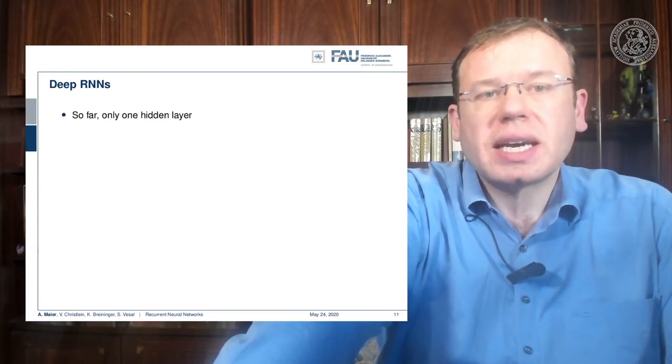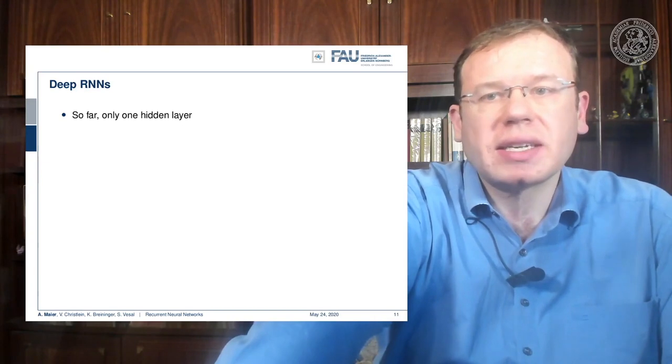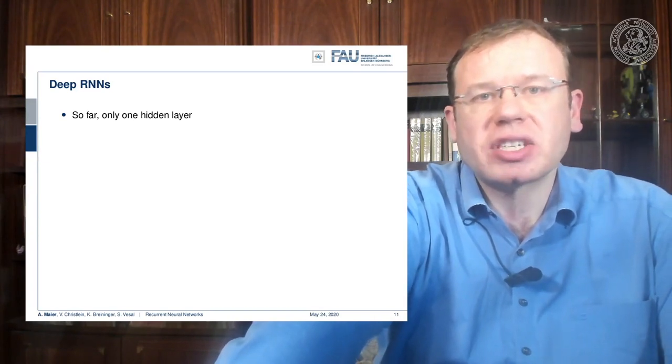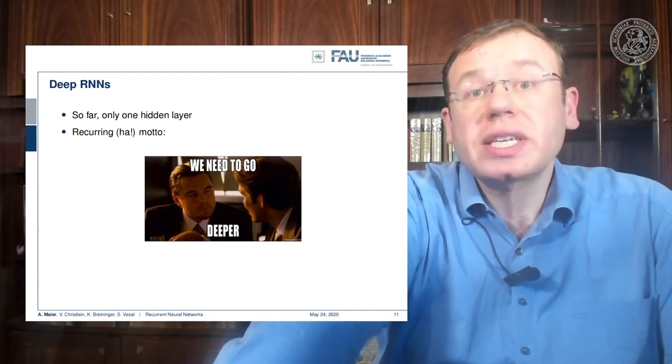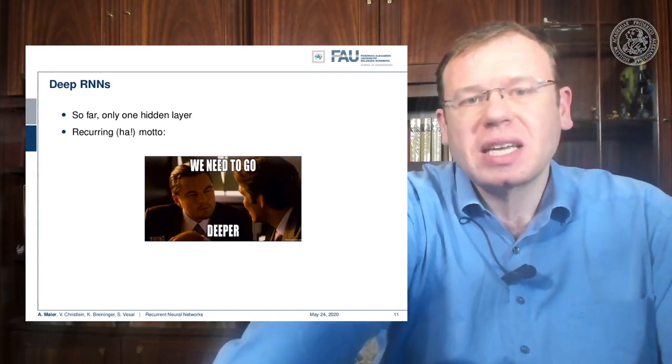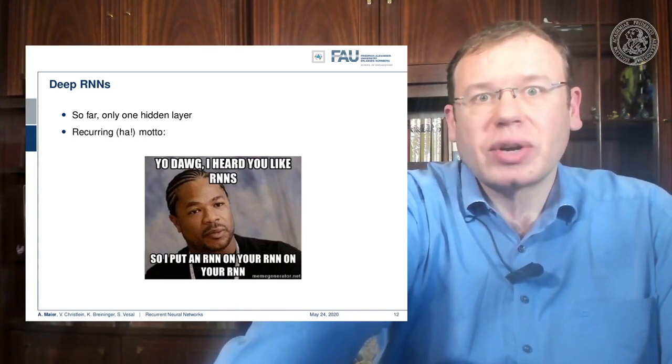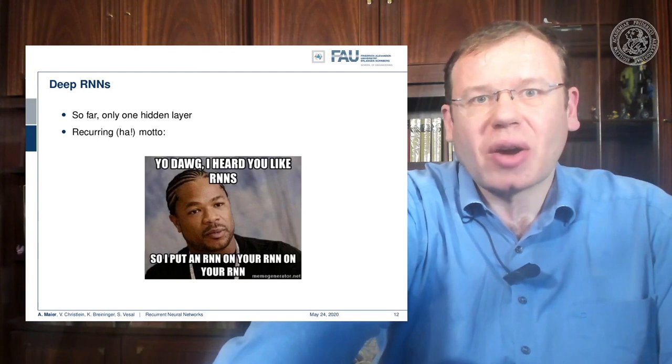Of course, we can also think about deep RNNs. So far, we only have one hidden layer, and we can just use our recurring model, which is we need to go deeper. But in this case, it's more like, your dog, I heard you like RNNs, so I put an RNN on your RNN on your RNN.